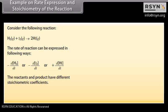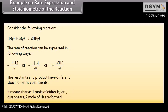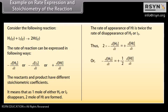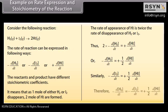The reactants and product have different stoichiometric coefficients. It means that as 1 mole of either H₂ or I₂ disappears, 2 moles of HI are formed. Thus, −d[H₂]/dt = +½ d[HI]/dt. Similarly, −d[I₂]/dt = +½ d[HI]/dt. Therefore, −d[H₂]/dt = −d[I₂]/dt = +½ d[HI]/dt.